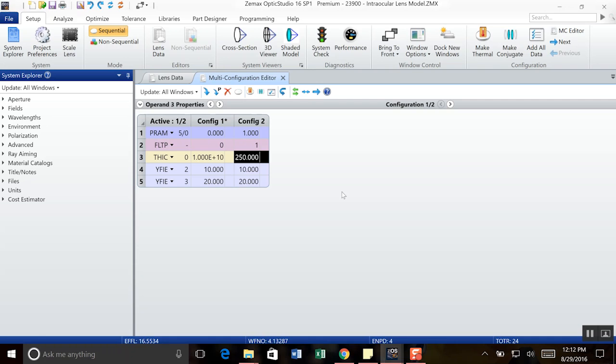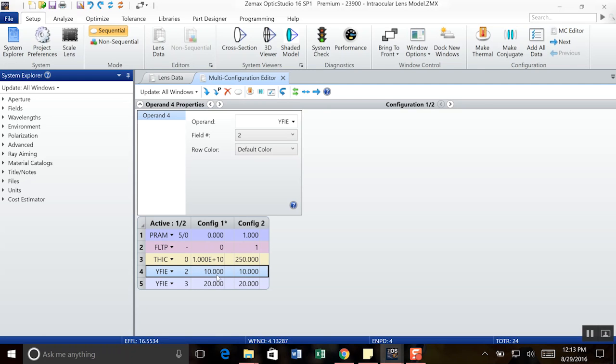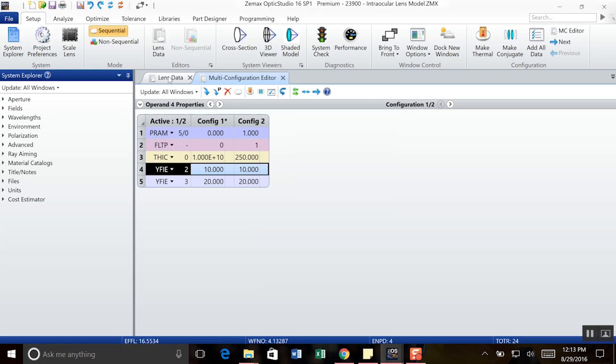And then, finally, we can use the Y field operand to say for field 2, we're going to want that to be 10 degrees and 10 millimeters for configuration 2. And then, for field 3, we're going to say 20 degrees and 20 millimeters for configuration 1 and 2. Now, note that these are actually going to have different angular subtenses, but we'll assume that for something in the near field such as a book reading text, that's obviously going to have a smaller angular subtense than in the far field. So, now that we've set that up, we'll go ahead and start the optimization process.